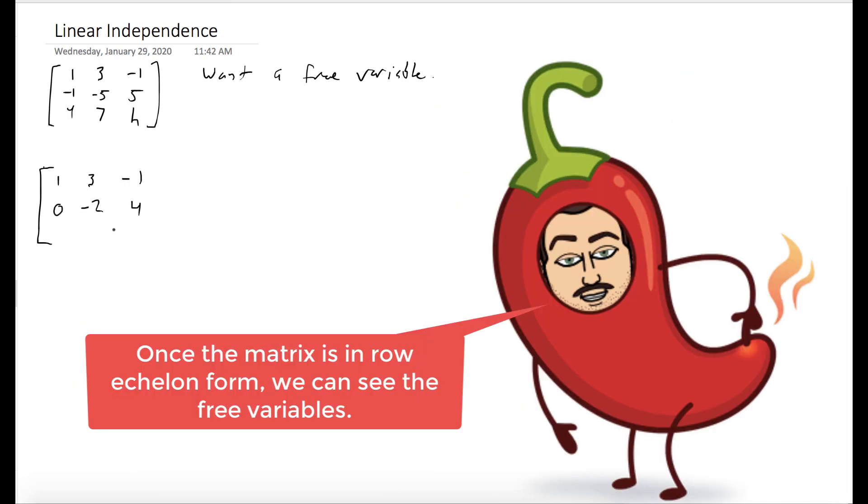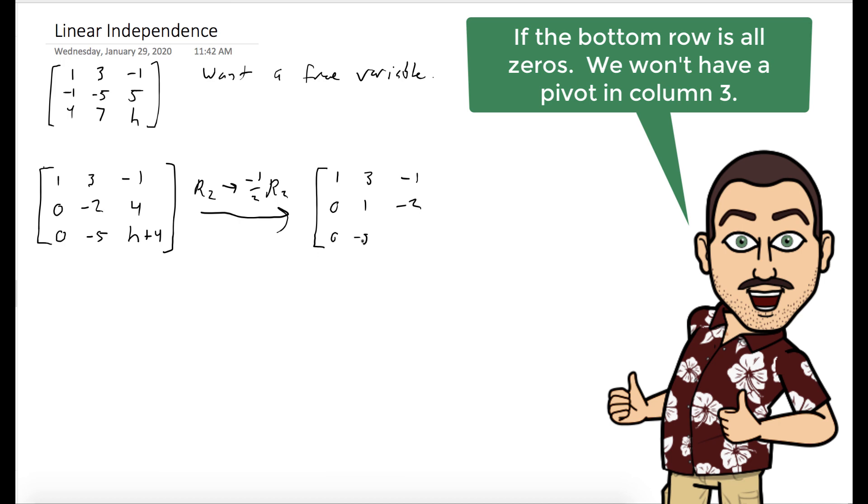So let's start row reducing until we get to row echelon form. Here we took the 1 in the first row to be our pivot and eliminated everything below it. And now we'll clean up the second row just to make it easier on the algebra. And we can eliminate the negative 5 in row 3 using the 1 in row 2.